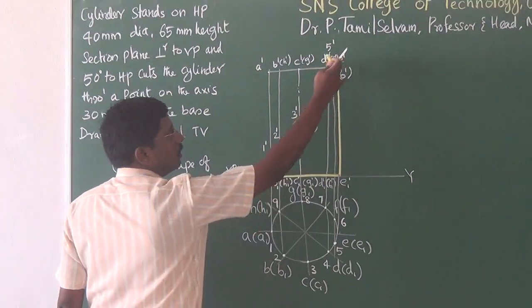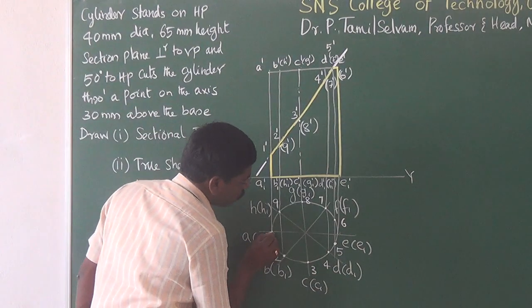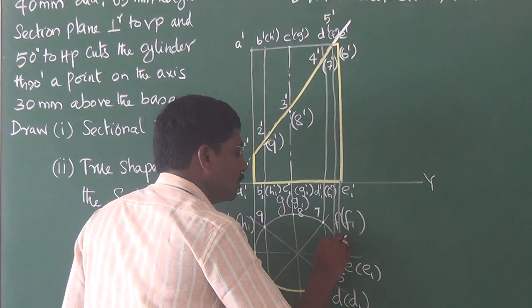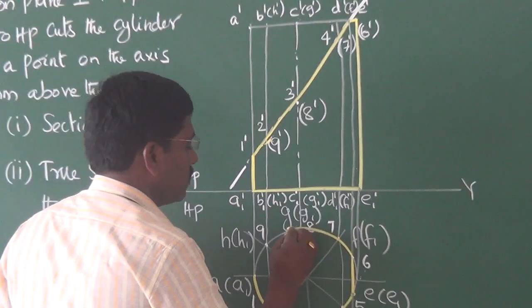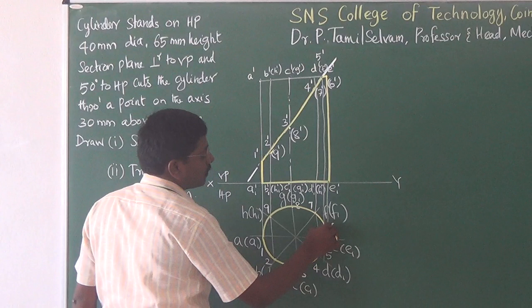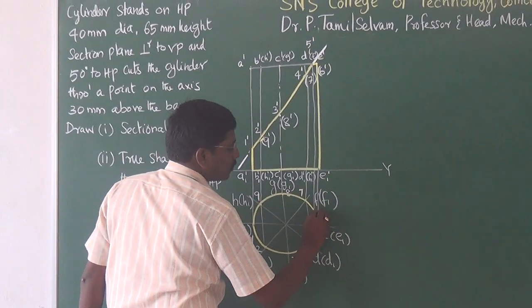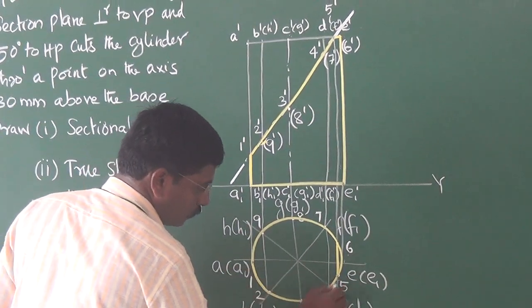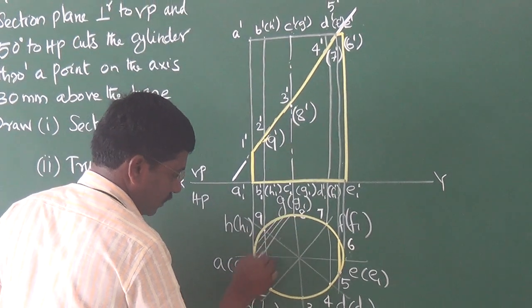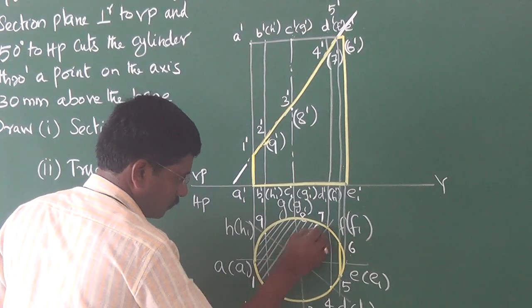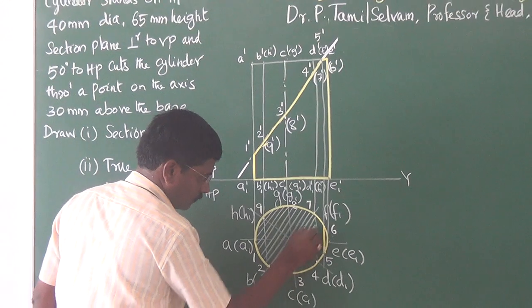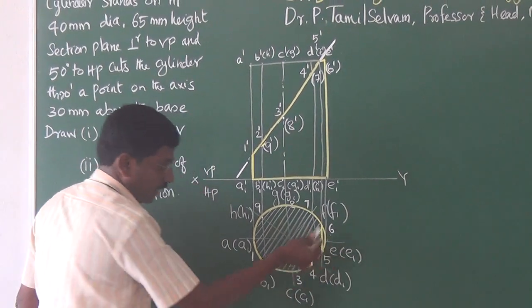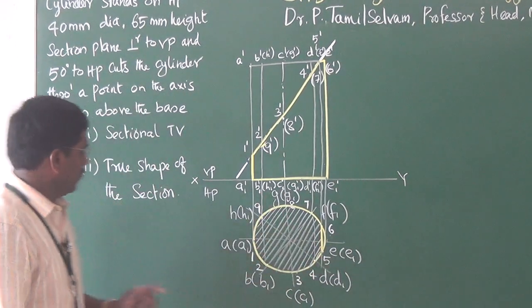This completes my front view. In the top view, I connect 1 to 2, 2 to 3 by smooth curve, 3 to 4, 4 to 5. Then 5 to 6 is a straight line, 6 to 7, 7 to 8, 8 to 9 as a continuous line. The remaining portion from 5 to E is drawn by a continuous curve. The hatched surface is the area from points 1 through 9, hatched at 45 degrees. The portion 5, 6, E is unhatched as it is solid. This completes the sectional top view.